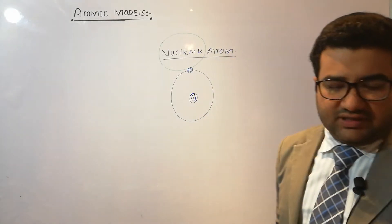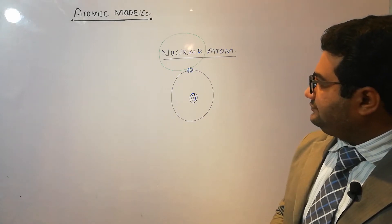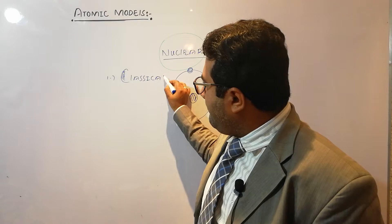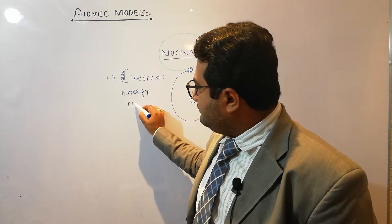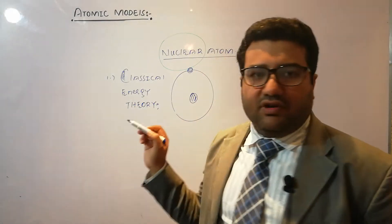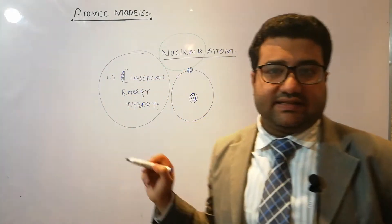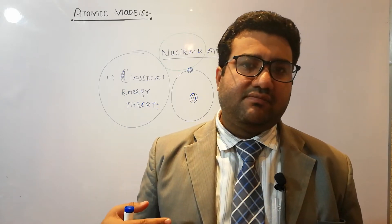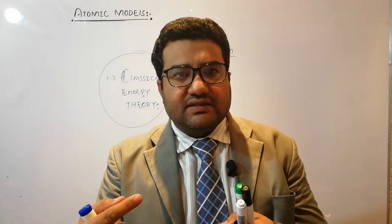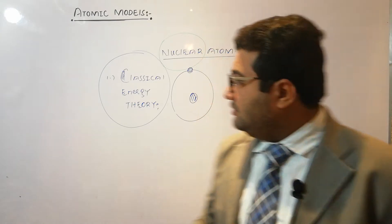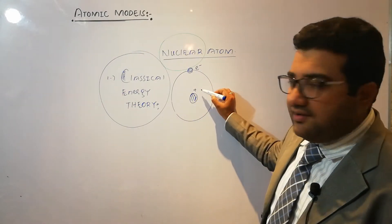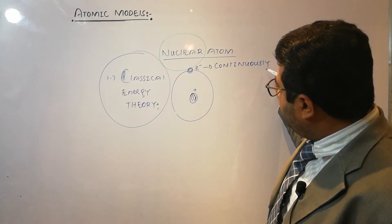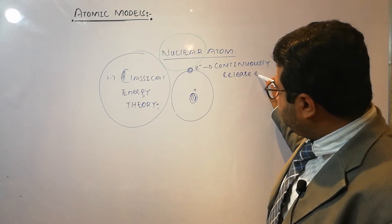Now, what were the drawbacks of Rutherford's atomic model? The first drawback was that at that time there was a classical energy theory in physics. According to this theory, when a charged particle revolves around another charged particle or charged species, the former always emits energy continuously. So this charged particle which is revolving around another charged particle should continuously release energy.